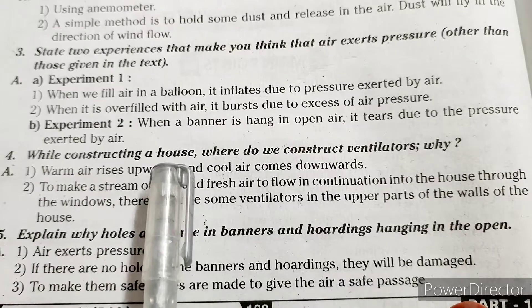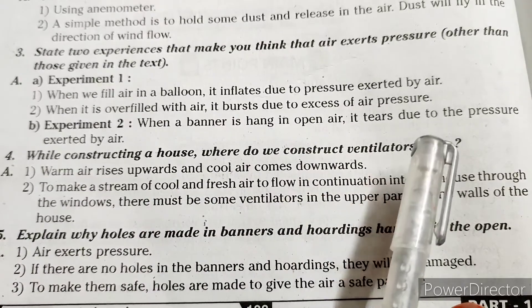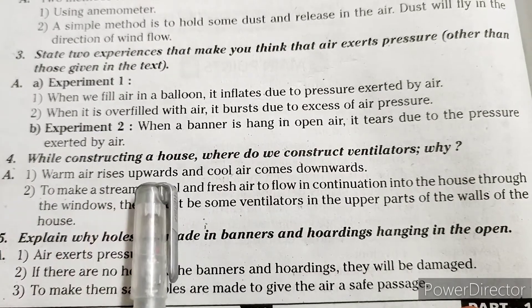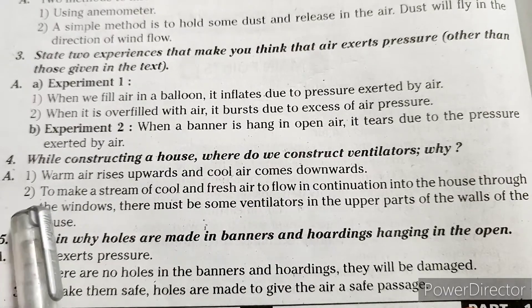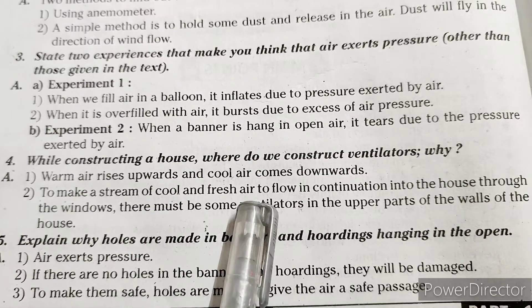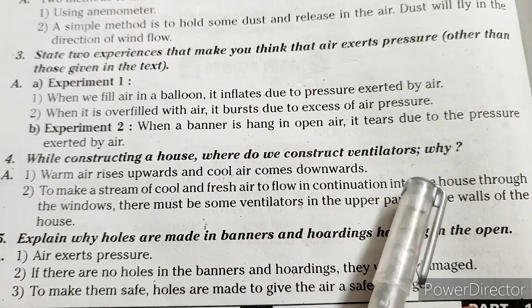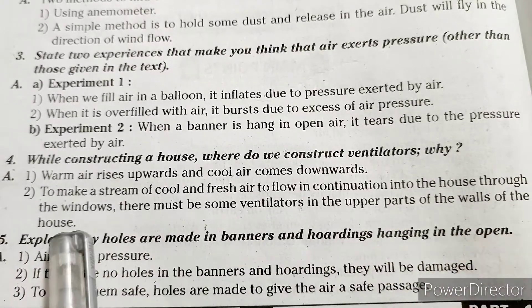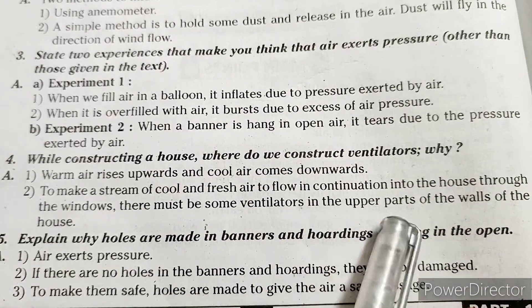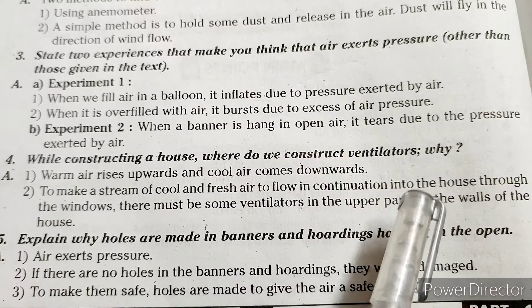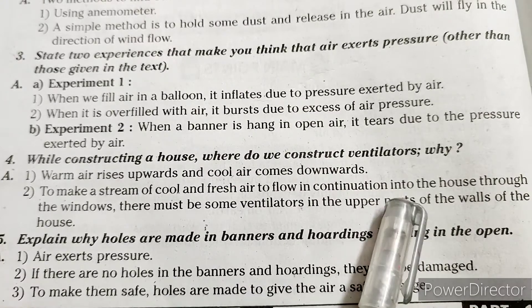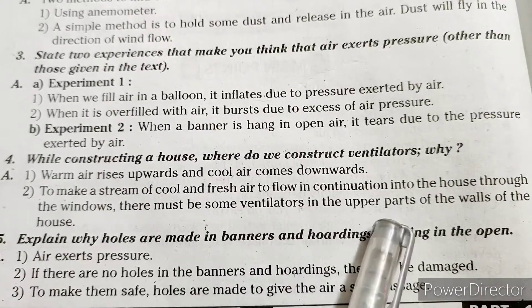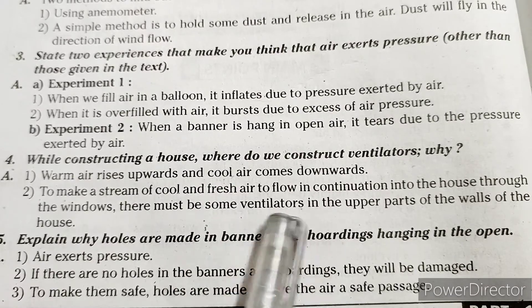Fourth question: While constructing a house, where do we construct ventilators and why? Answer: Warm air rises up and cool air comes downwards. To make a stream of cool and fresh air flow into the house continuously through the windows, ventilators must be placed in the upper parts of the walls. Because warm air rises upwards, it can go out from the ventilators and cool air can get inside.